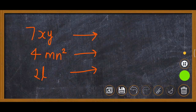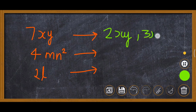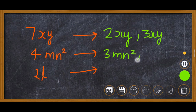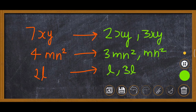We are writing the like terms for 7xy. Like terms have the same variable as 7xy, so we can write 2xy and we can write 3xy. These like terms can be made, and this one is now completed.